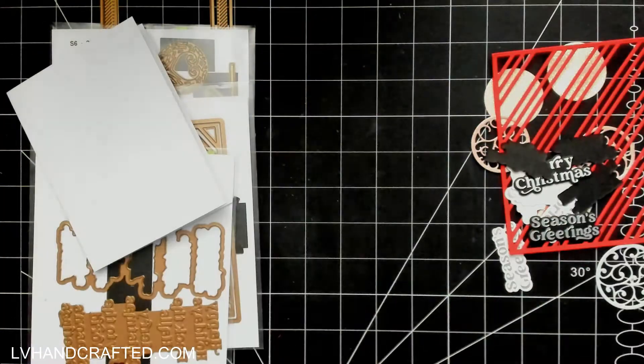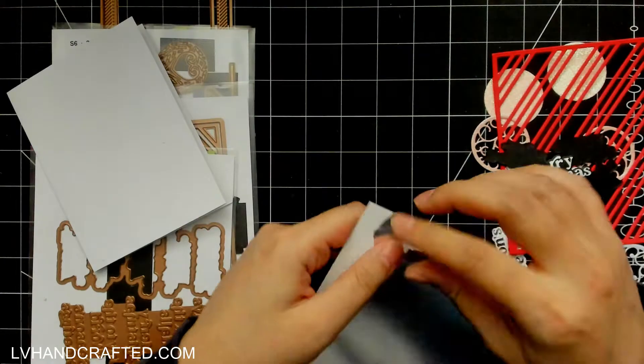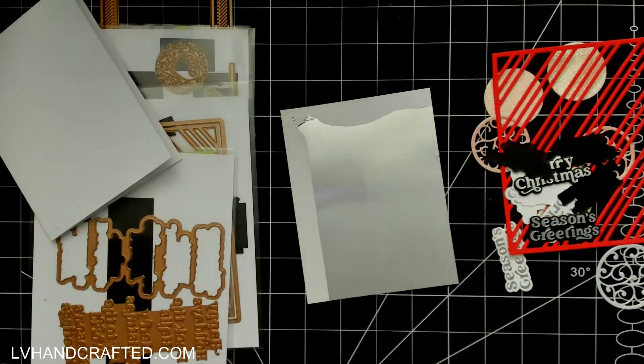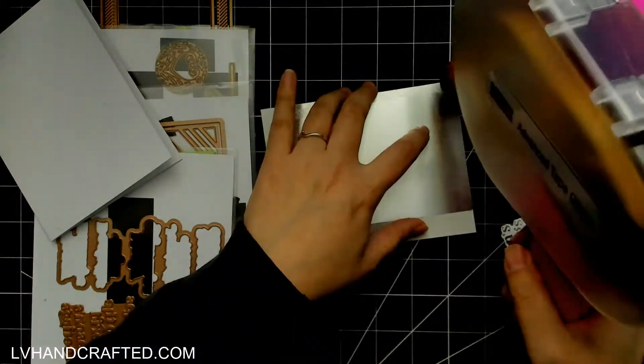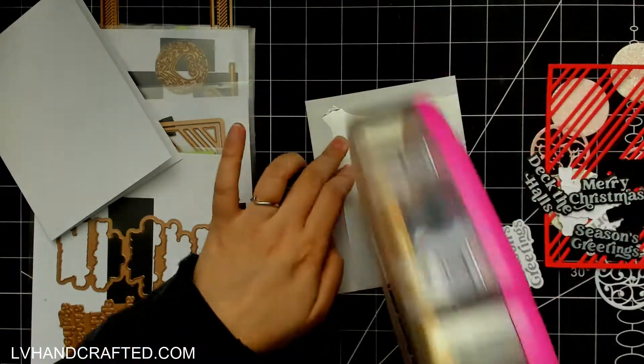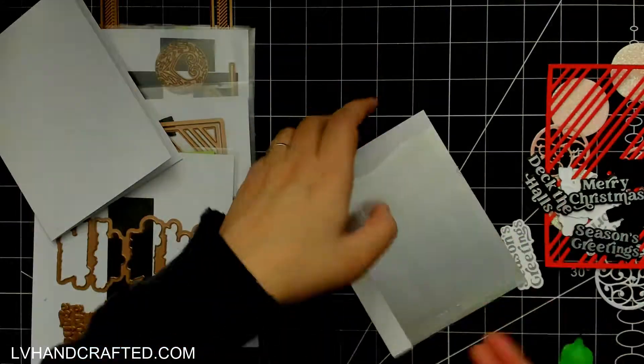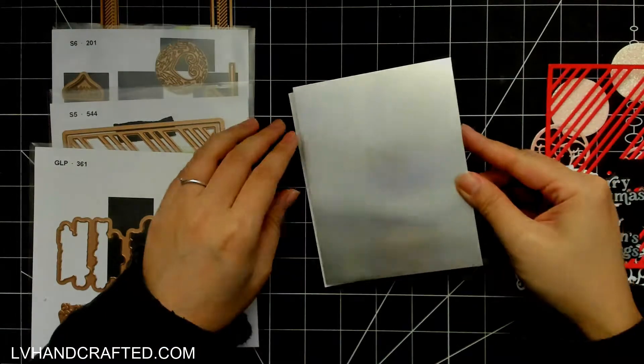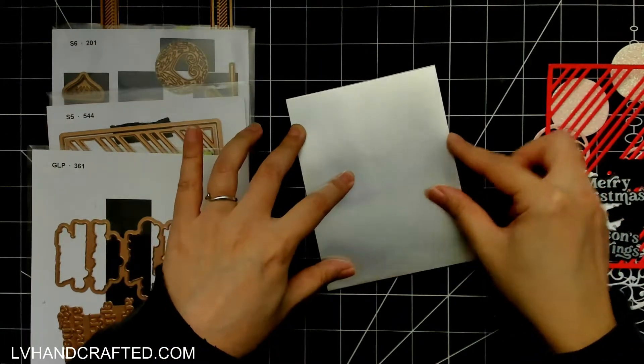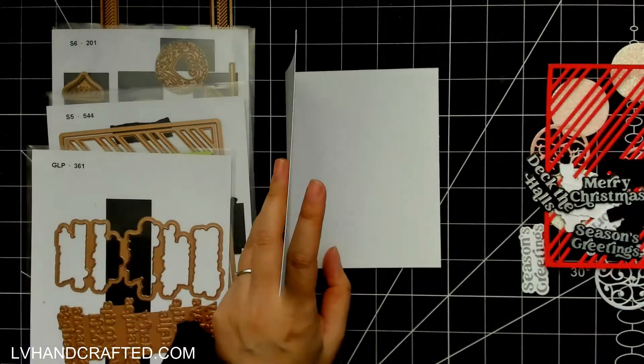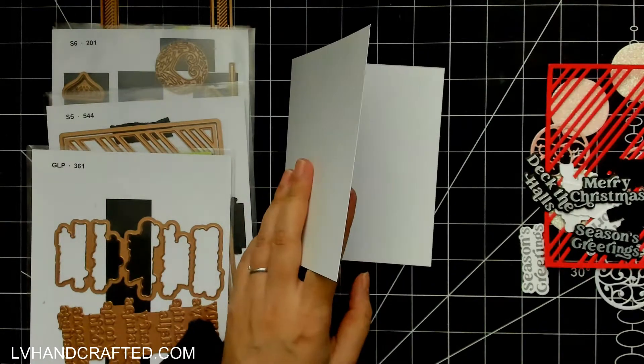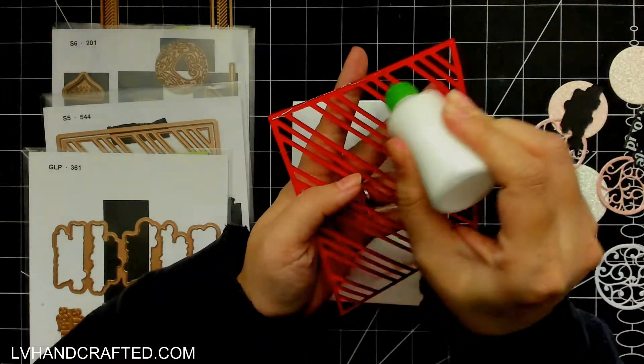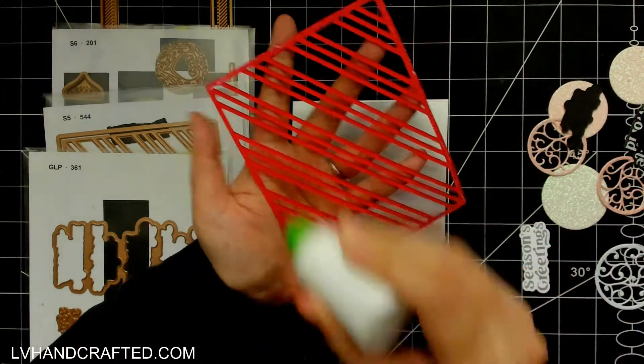I don't know if this has ever happened to anyone else but I have this bit of foiled mirror card in silver and thankfully it's double-sided because one side the foil actually kind of lifted away and as you saw there I just peeled it right off as much as I could and thankfully it was double-sided and so the other side was perfectly fine but I'd never seen that before.